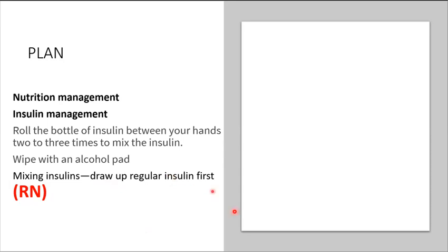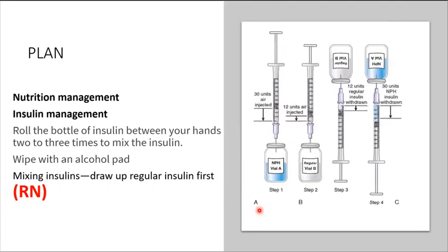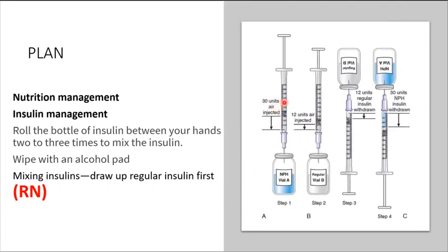For example, if 30 units of NPH, remember your NPH is going to be cloudy, and 12 units of regular insulin, which is going to be clear, is to be given. First of all, you want to inject the corresponding amount of air into those vials.